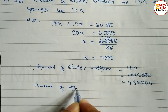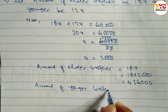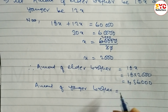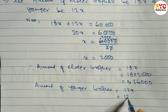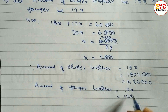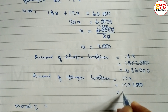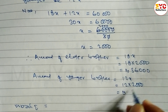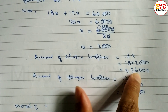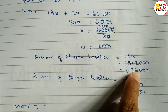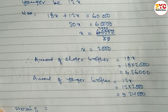The amount of the younger brother is 12x. Substituting x = 2,000, we get 12 × 2,000, which equals Rs. 24,000. Now we need to subtract to find how much more the elder brother gets.